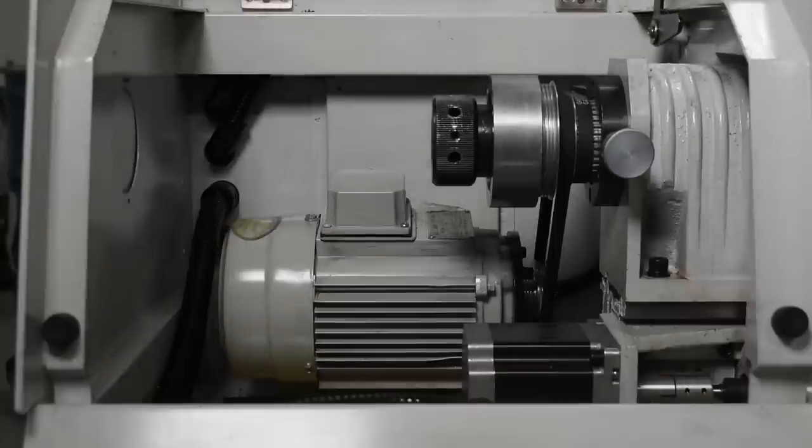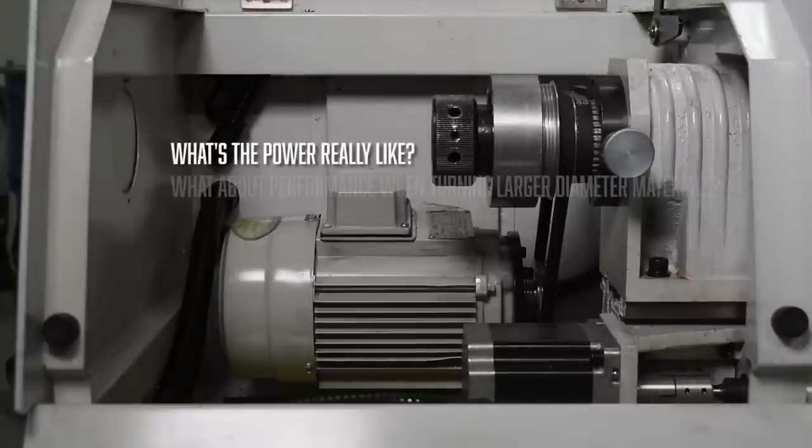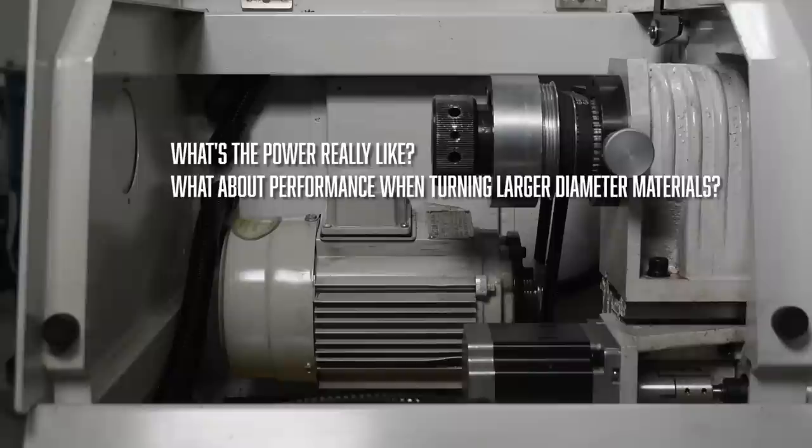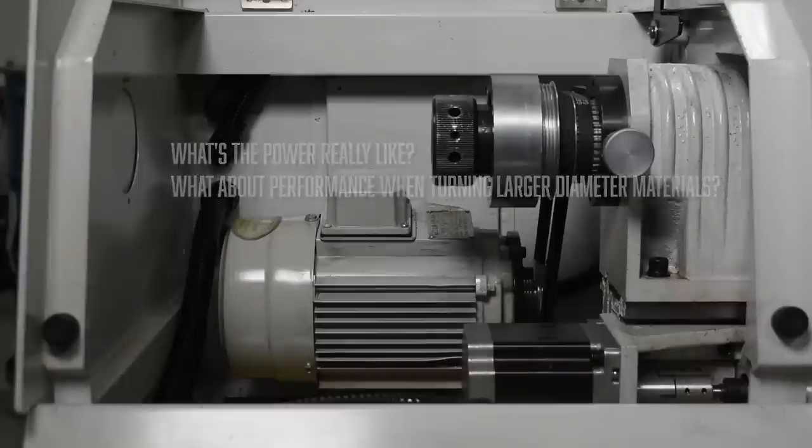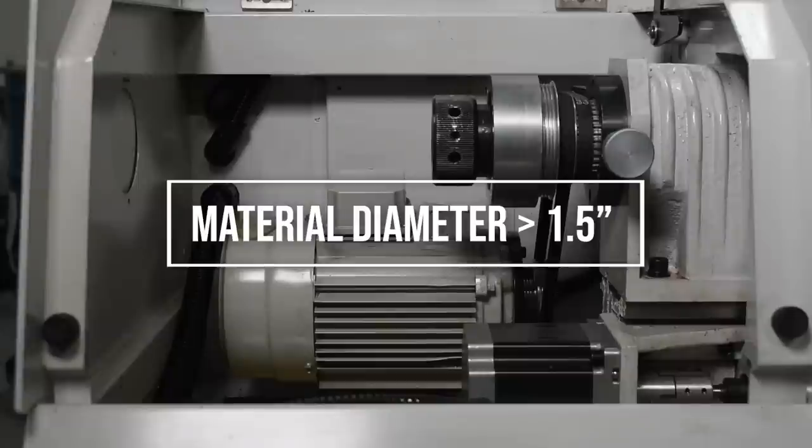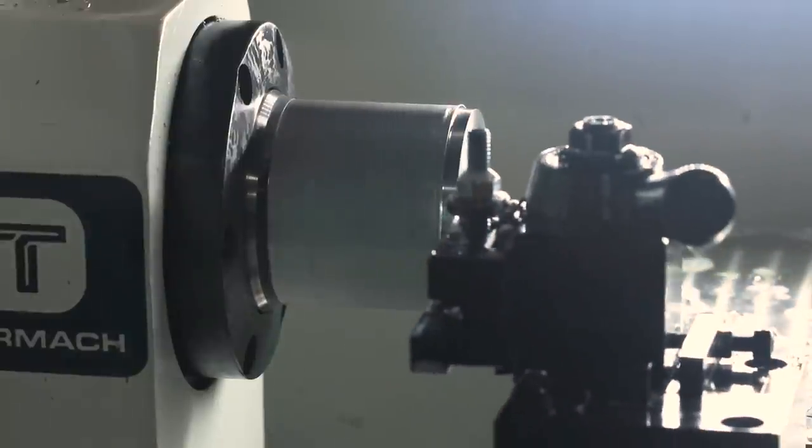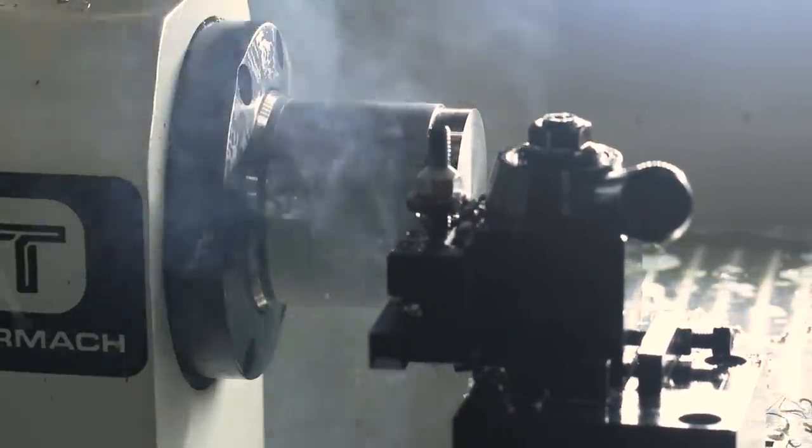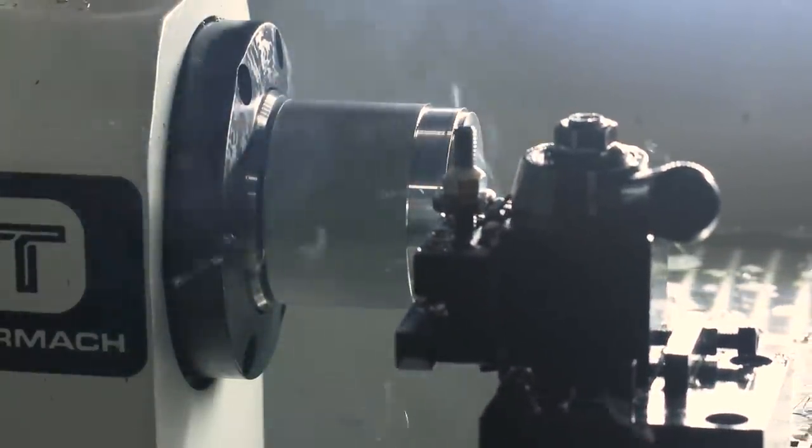One of the most common questions I get asked is what's the power really like and how well does it act with turning larger diameters. When your diameter starts getting above about one and a half inches, you have to really cut back on your depth of cut, and that can make breaking a chip very hard. Also you start running the line of where your spindle is going to stall or not.